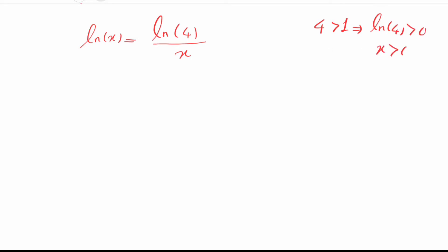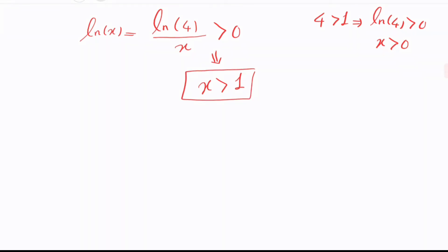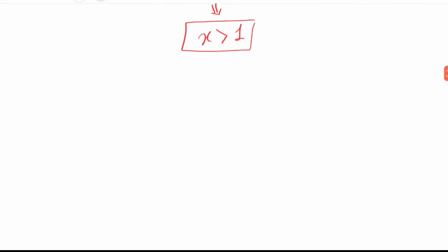We know that ln of x is a positive number, which implies that x is greater than 1. Up to now we have shown that if there is a solution for this equation, x must be greater than 1.